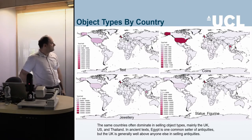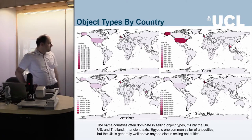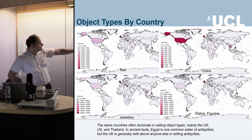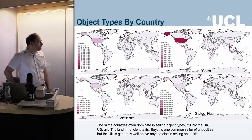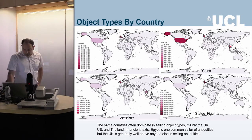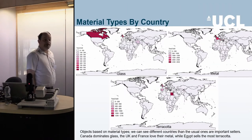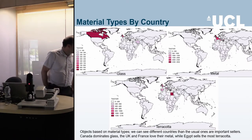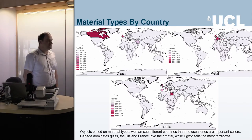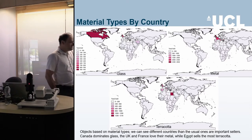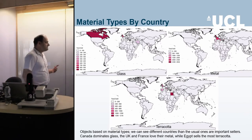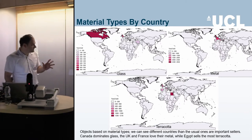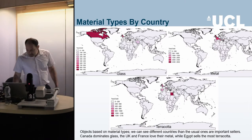Breaking results down by object type: Britain is the top seller for most categories including texts, coins, and jewelry, though the US comes much closer in coins. Thailand plays an important role in jewelry and statues. Canada is actually the number one seller of glass-based objects. France plays a significant role in selling metal-based objects. Egypt is the number one seller of terracotta-based objects, which aligns with Egyptian antiquities tending to be terracotta-based, whereas other cultures are more metal-based.